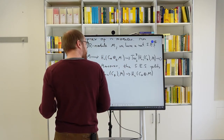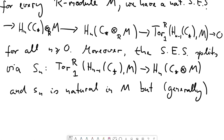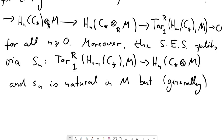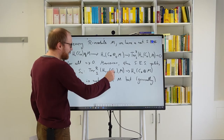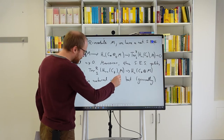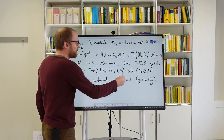So by a splitting s_n, and s_n is natural in M, but generally not in C*. Meaning one can consider s_n for fixed C* as the components of a natural transformation when plugging in each M, so that everything commutes with morphisms — but there is no way to do this in general for the chain complex C*.